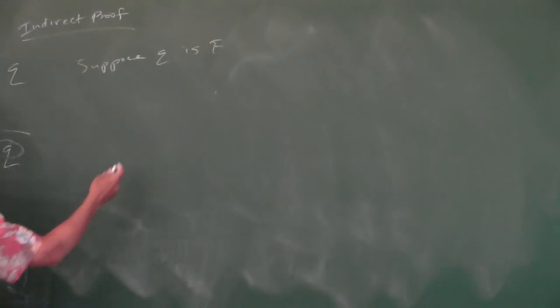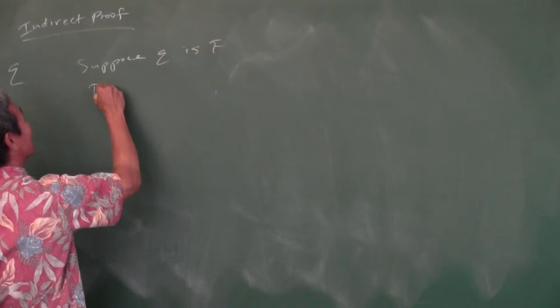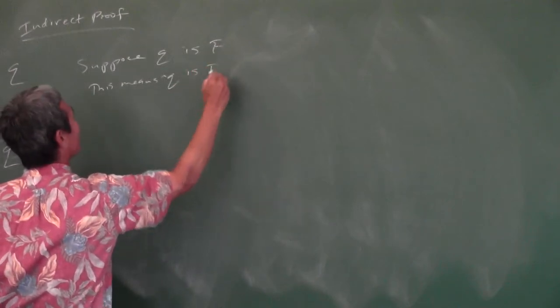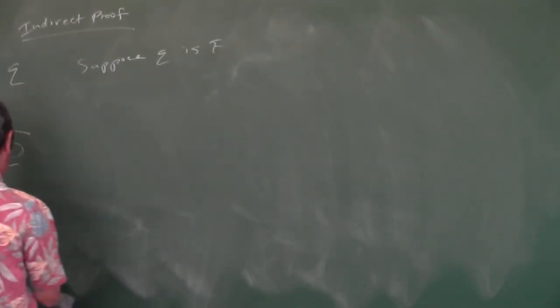For example, with modus ponens: P implies Q, P, therefore Q. Suppose Q is false. Now, P implies Q is a conditional statement. If Q is false and the conditional is a true premise, then P has to be false — because if P were true and Q false, the conditional would be false, contradicting our premise.